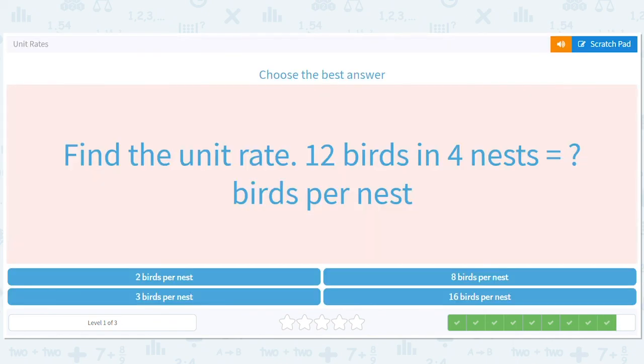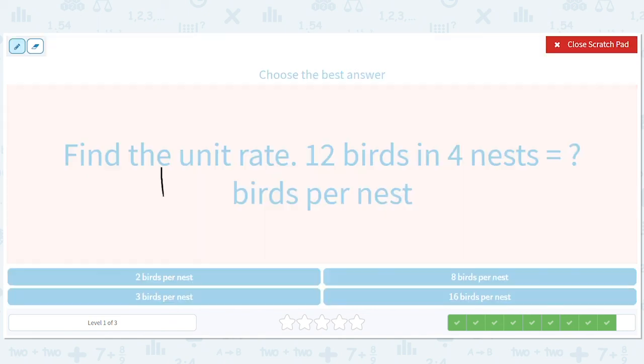Find the unit rate. Twelve birds in 4 nests - well, 12 divided by 4 is 3, so it's 3 birds per nest.